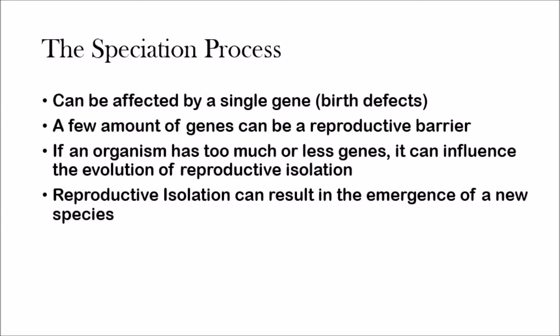To answer Darwin's second question — how many genes need to change for a single species to split into two — it actually depends. Sometimes speciation can be affected by a single gene; just one gene changes and you have a different species. A few genes can form a reproductive barrier, and if an organism has too many or too few genes it can influence the evolution of reproductive isolation. Sometimes it's just one gene, sometimes many genes have to change in order for a new species to be created — it all depends on what those genes are. Reproductive isolation can result in the emergence of a new species. That's it for now — hybrid zones are as simple as that.